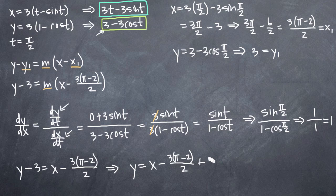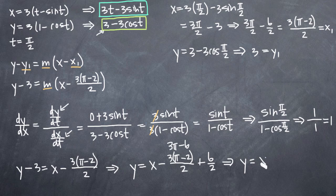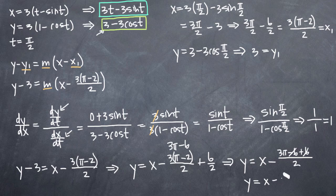We'll write the plus 3 as plus 6 over 2 to get a common denominator. Expanding, we get 3 pi minus 6 plus 6 in the numerator, so we have y equals x minus 3 pi minus 6 plus 6, all over 2. The 6s cancel, leaving us with y equals x minus 3 pi over 2.